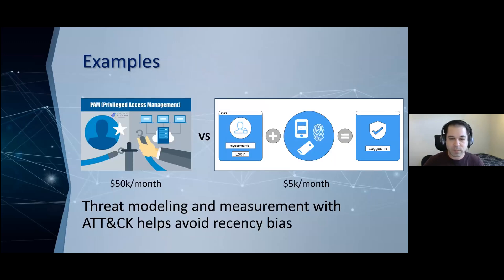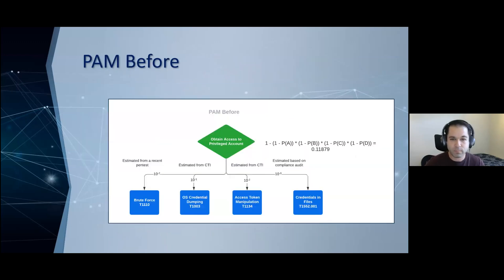I thought the best way to show this would be with an example. Let's say you're an organization trying to look at deploying a privileged access management system for your Active Directory, or passwordless logons for your single sign-on solution. The first costs $50K a month and the second $5K a month. You've recently had a pen test where auditors said you have a lot of passwords and attackers are brute forcing single sign-on portals. So your CISO is looking at the second option because it's cheaper. Using threat modeling, we decompose the risk into four leaf nodes — brute force, credential dumping, access token manipulation, and credentials in files — each correlated with their associated ATT&CK technique.